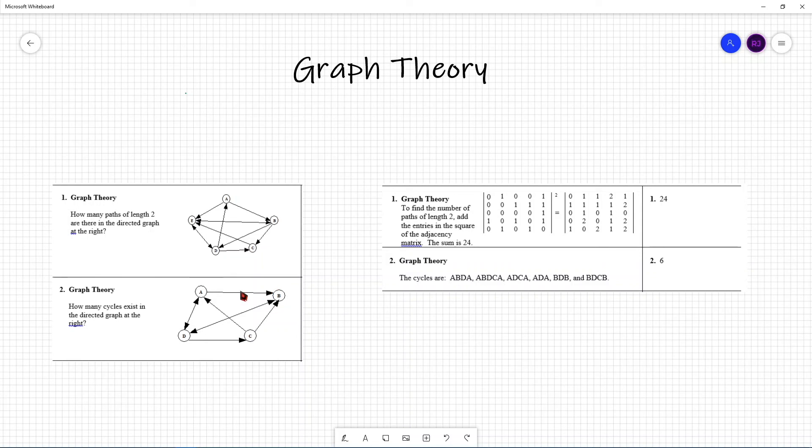As we can see in this example, the first one is A to B to D to A. Another one is A to B to D to C to A. Another one is A to D to C to A. A, D, A. B, D, B. B, D, C, B.